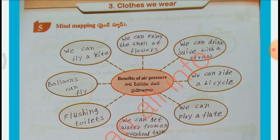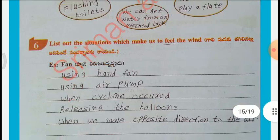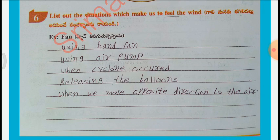More benefits of air pressure: flushing toilets, balloons can fly, we can fly a kite. List out situations which make us feel the wind: using a fan, using a hand fan, using an air pump, when a cyclone occurs, releasing balloons, when we move in the opposite direction to the wind.